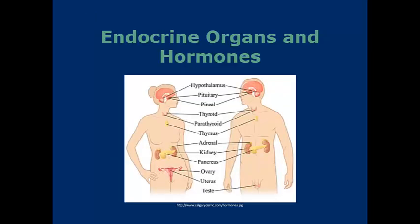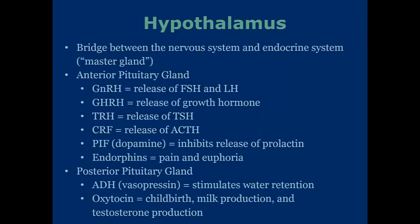Now that we've talked about the mechanisms of hormone action, we're going to go into the endocrine organs, the hormones they release, and the effects of those hormones. Before we can discuss anything regarding the endocrine system and glands, we have to talk about the hypothalamus — the master gland. This bridges the nervous system and the endocrine system, and it's connected to the anterior and posterior pituitary gland. These two glands release certain hormones that trigger other responses in the body.